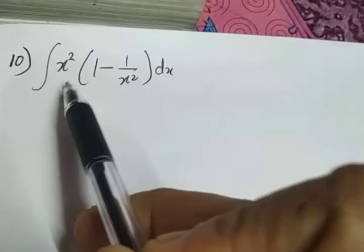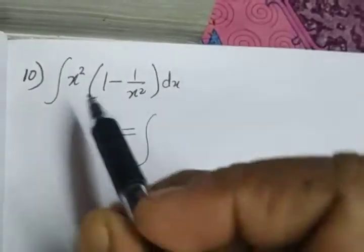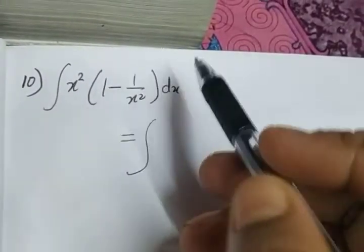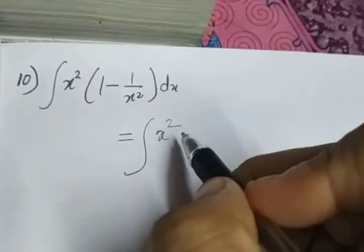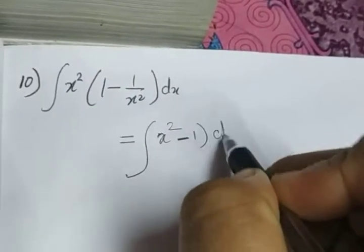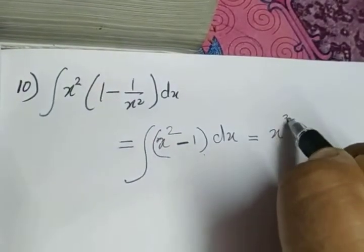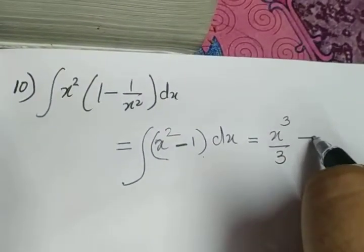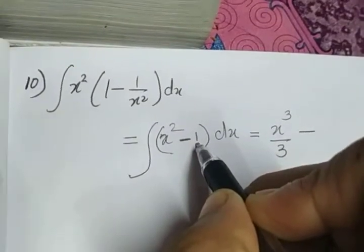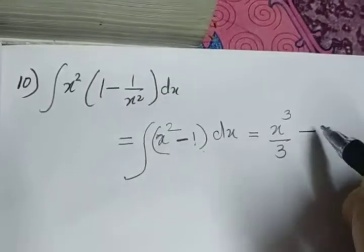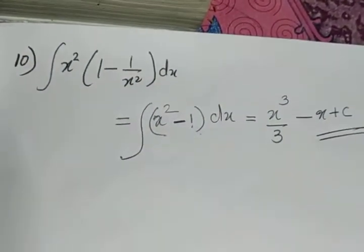The next question is integral of x² into (1 - 1/x²) dx. First, we open the bracket: x² into 1 gives x², and x² into -1/x² gives -1. So we integrate: integral of x² is x³/3, minus integral of 1 dx. The derivative of x is 1, so integral of 1 is x. As the integration is over, we write plus C.